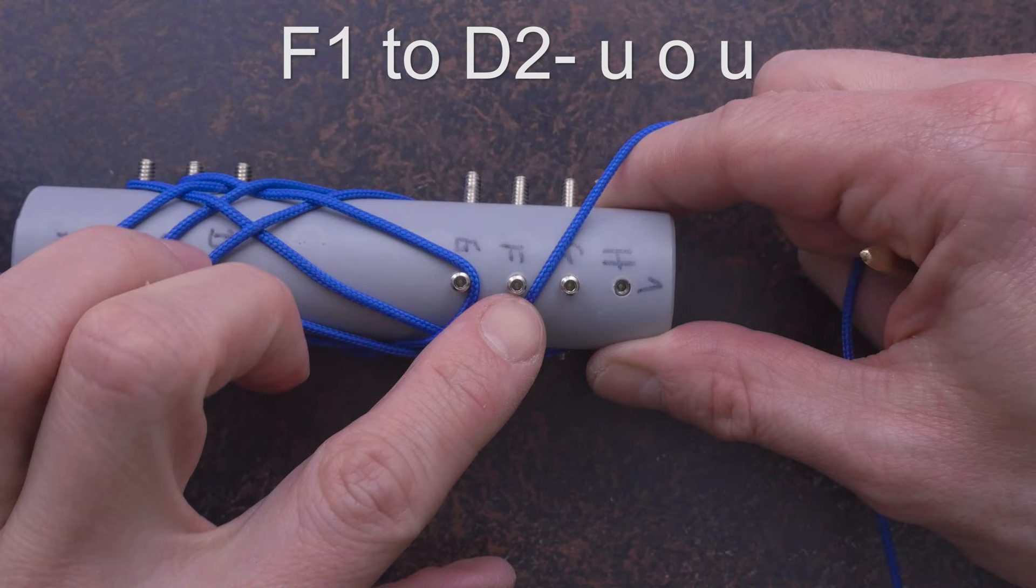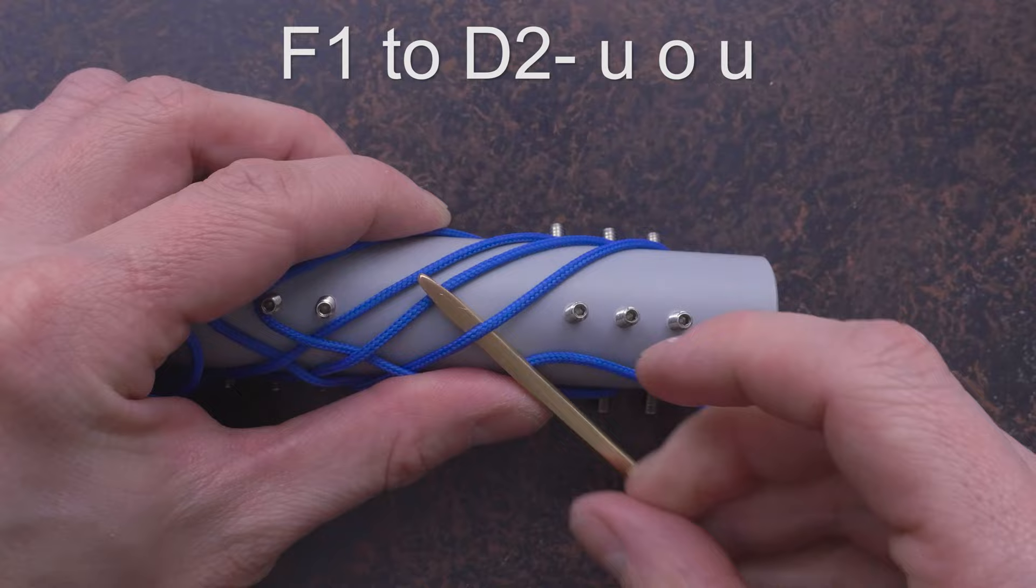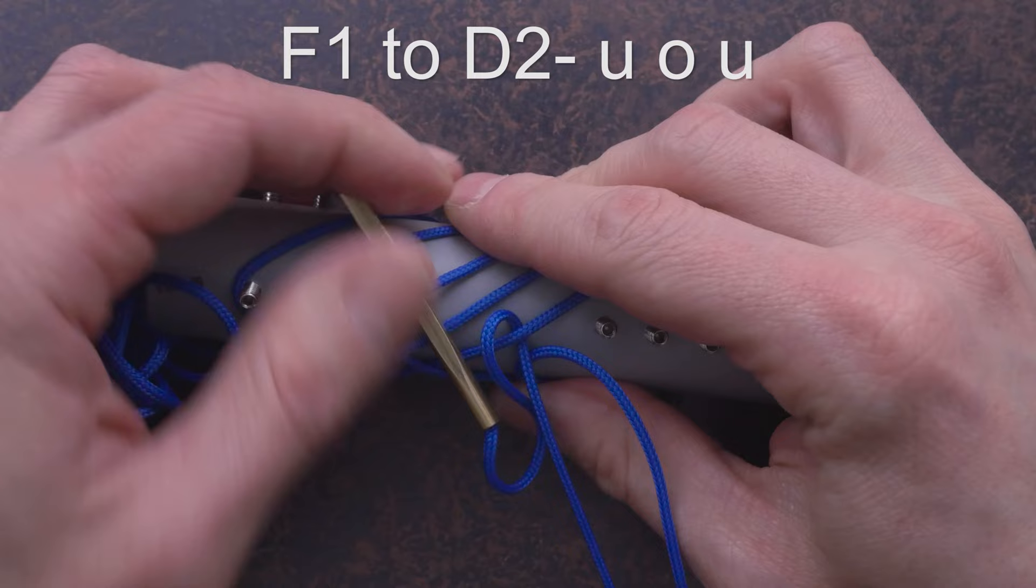From F1, we move to D2, going under, over, under.